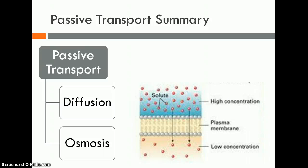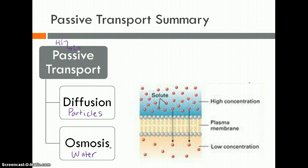To sum up, we looked at passive transport with two examples: diffusion and osmosis. Passive transport is moving things from high concentration down to low — it's easy, no energy required. Diffusion involves movement of particles like oxygen and carbon dioxide, while osmosis is the movement of water from high to low across the cell membrane.